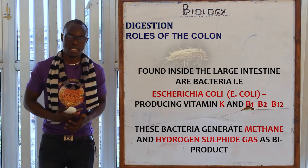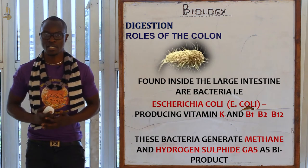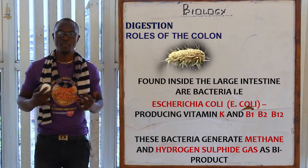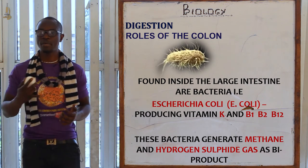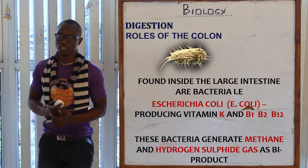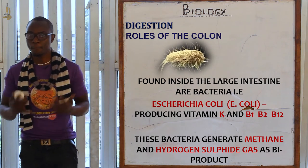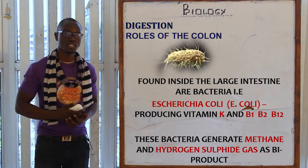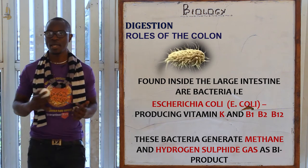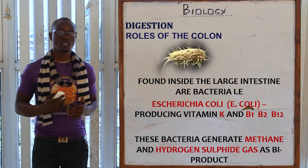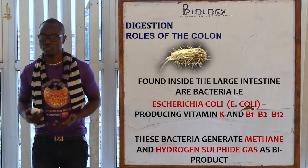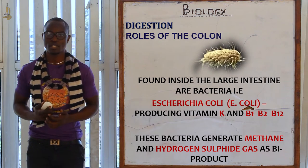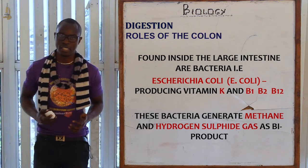Living inside the large intestine we have different bacteria. For example, Escherichia coli, mainly called E. coli, which mainly produces vitamin K, vitamin B1, B2, and B12. They also generate methane gas and hydrogen sulfide gas as by-products, which contribute to the foul smell of feces, apart from the by-products of bile juice from the liver.